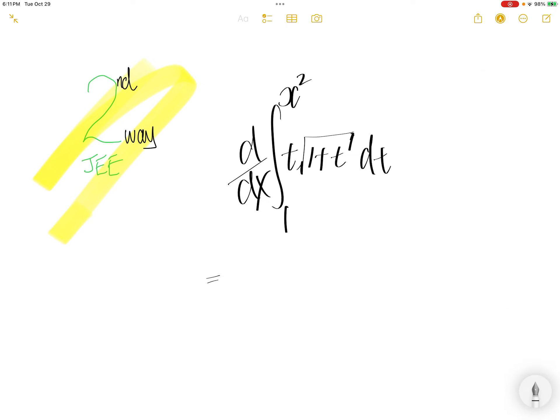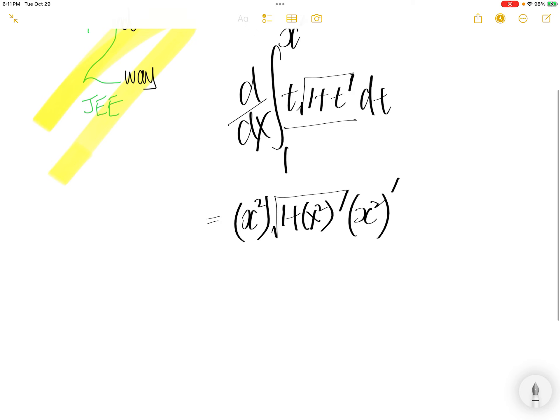From the fundamental theorem of calculus, you are going to replace the function variable t with the upper limit. So t becomes x squared, and then square root of 1 plus t becomes square root of 1 plus x squared, the upper limit, times the derivative of the upper limit.